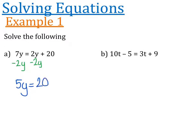Just like yesterday's lesson, now we've got 5y is equal to 20, so we can divide both sides by 5 and get y is equal to 4. That is the easiest way we can do this — we've got a letter on both sides and just one number.